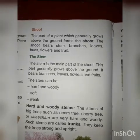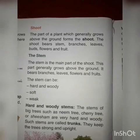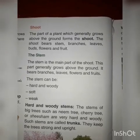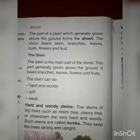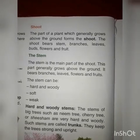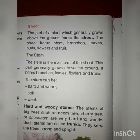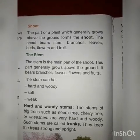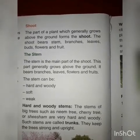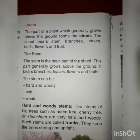Today's topic is the shoot. The part of a plant which generally grows above the ground forms the shoot. The shoot bears stem, branch, leaves, buds, flowers and fruits. Plants का वह part जो generally ground के ऊपर की ओर grow करता है उसे shoot कहते हैं। Shoot में stem, branch, leaves, buds, flowers सभी आते हैं।